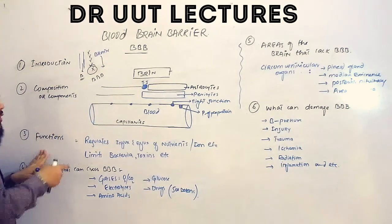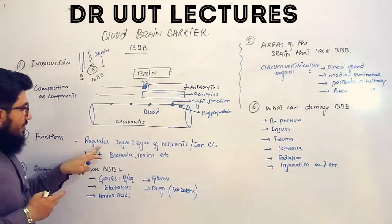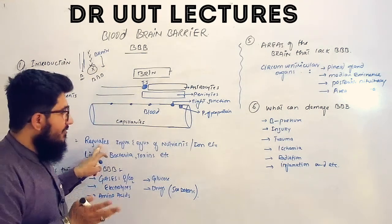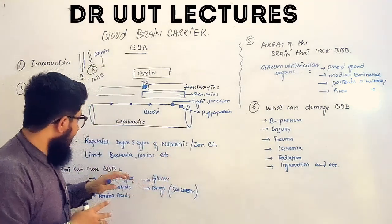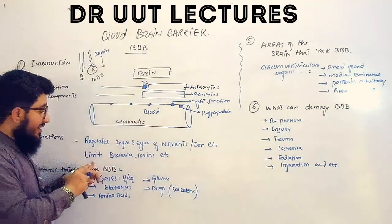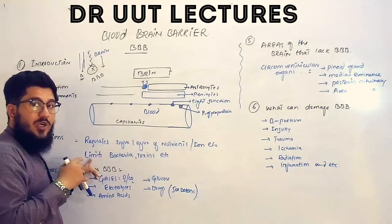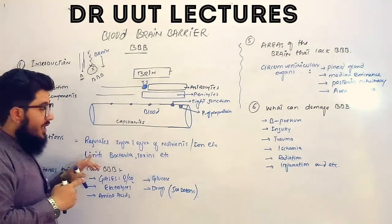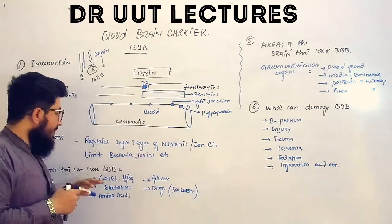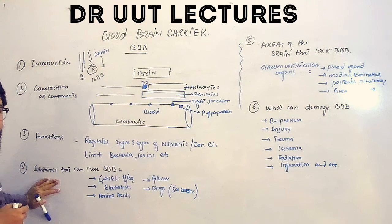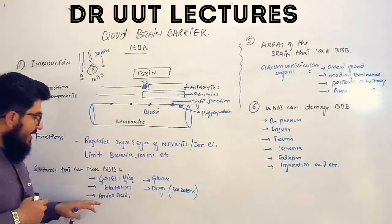Now let's elaborate on the functions of the blood brain barrier. It regulates the influx and efflux of nutrients, ions, and minerals. Very importantly, the blood brain barrier limits the movement of bacteria and toxins towards the brain tissues or brain cells.